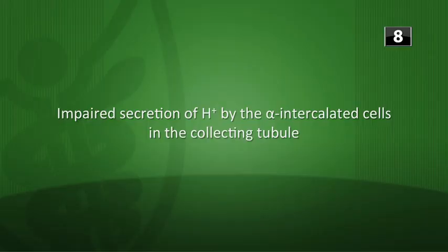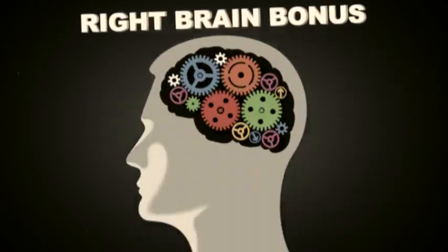pH 7.33 — respiratory acidosis with metabolic compensation. Last question: a patient with kidney stones presents with hypokalemia and metabolic acidosis, normal anion gap, urine pH 5.7. Hypokalemia occurs in both type 1 and type 2 RTA, but only type 1 RTA has urine pH greater than 5.3 — so this is type 1 RTA. The defect is impaired secretion of hydrogen ions by the alpha intercalated cells in the collecting tubule.